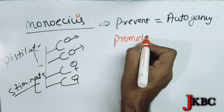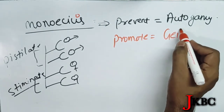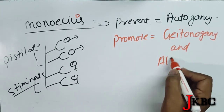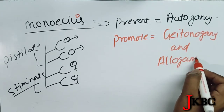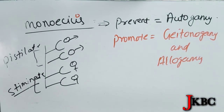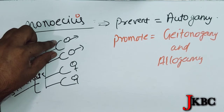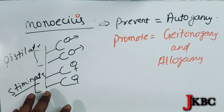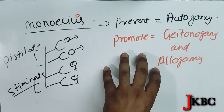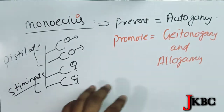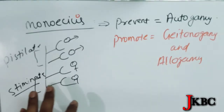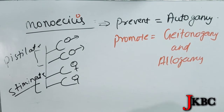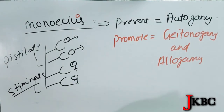We can also promote geitonogamy and allogamy. Geitonogamy is the transfer of pollen grain from one plant to another plant of the same species — for example, from one Cucurbitaceae plant to another Cucurbitaceae plant located in another place. Allogamy is the transfer of pollen grain from one anther to the stigma of another species.